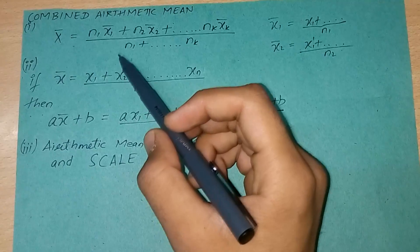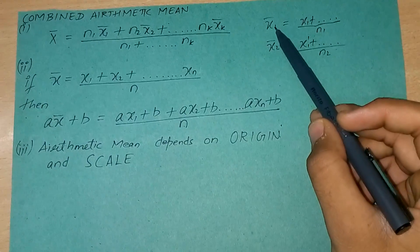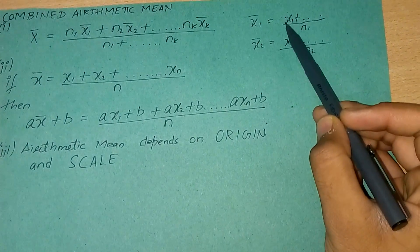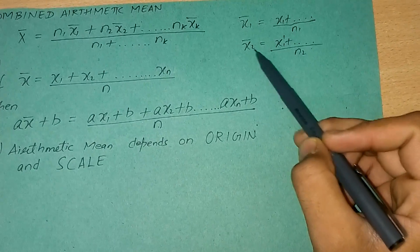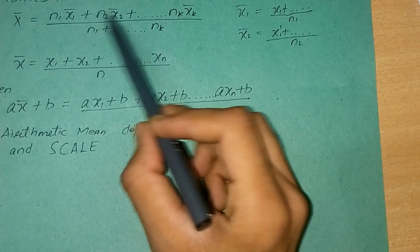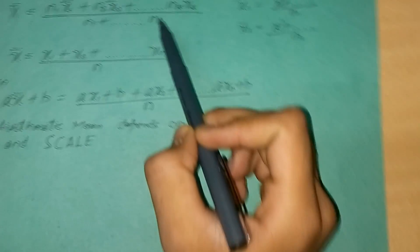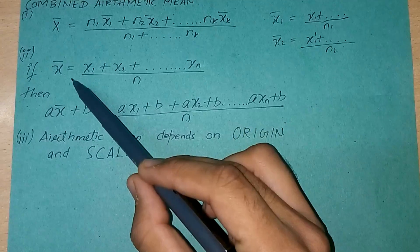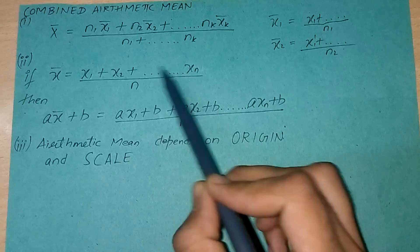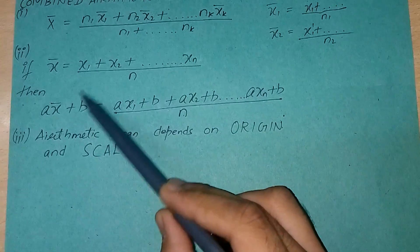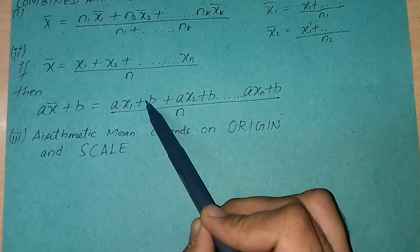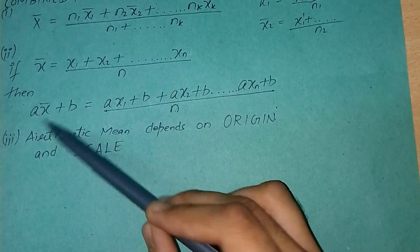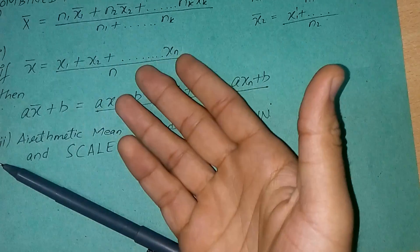Combined arithmetic mean is useful when we have k groups of means: x̄₁ is the mean of n₁ observations, x̄₂ is the mean of n₂ observations, and so on for k groups. Their combined arithmetic mean is given by the standard formula. One more important point: if x̄ is the mean and we multiply each observation by 'a' and add a constant 'b', the new mean is a·x̄ + b. Remember that arithmetic mean depends on both origin and scale.